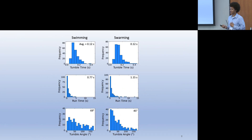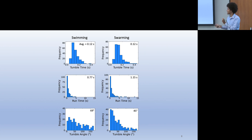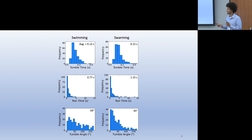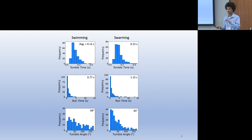Some of the data we procured is displayed here. Swimming cells perform tumbles with a tumble time of 0.12 seconds on average; the run time between tumbles is 0.77 seconds on average; and they have a tumble angle of 69 degrees. For the swarming cells, the tumble time is nearly identical, but the runs are extended and the tumble angle is decreased. This increase in run time has been shown in the literature before, but what we found interesting is the reduction of the tumble angle, which hasn't received much emphasis.